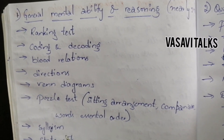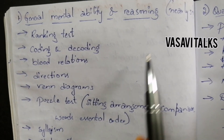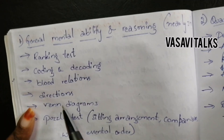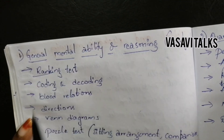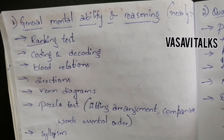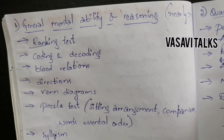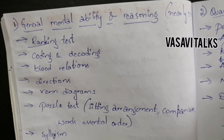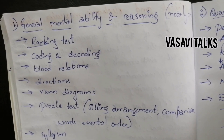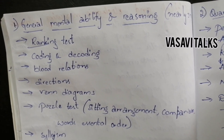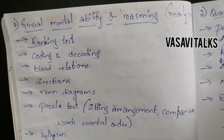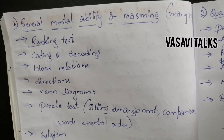In general mental ability and reasoning, you have 5 marks. The first important topic is the ranking test. Ranking test is about order — for example, suppose person X is to the left at the 10th place and person Y is to the right at the 5th place, so find the total number of students in a line, assembly, or class.